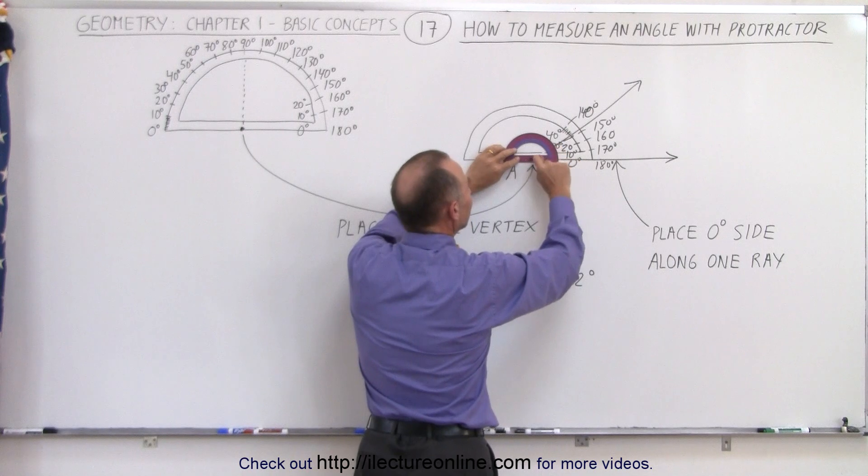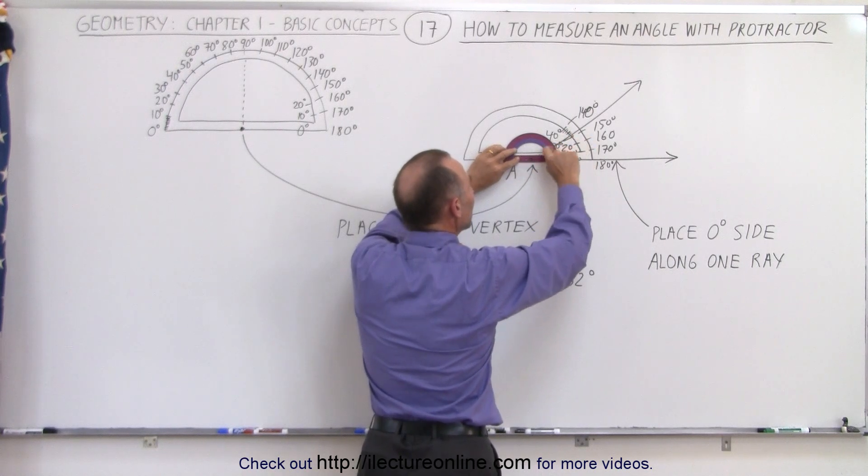And then you can see here that would be the zero angle reading, so there you put that at zero, and then you would take a look over here and see where the second ray crosses the markings over here.